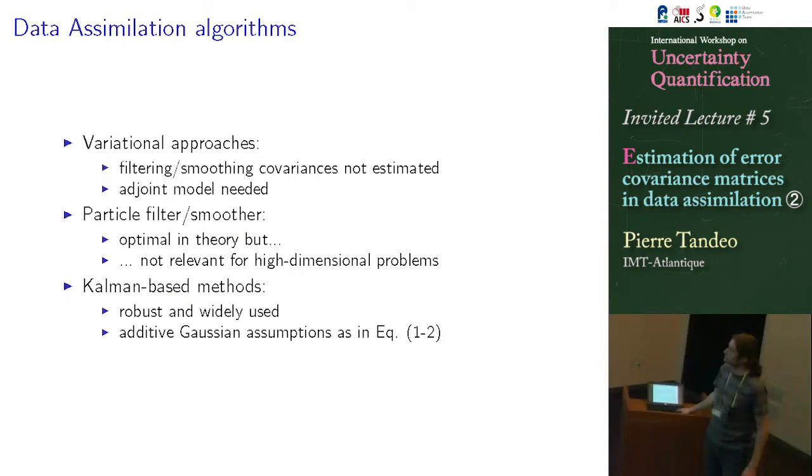So basically, the three main algorithms used in data assimilation, I will go very quickly on that, are different approaches. The first one is try to make a direct optimization of our problem and try to find the best trajectory using variational approaches. So I will not use this method because the problem is that it's very difficult to get the covariances. So the error of our state. And you need also the adjoint model.